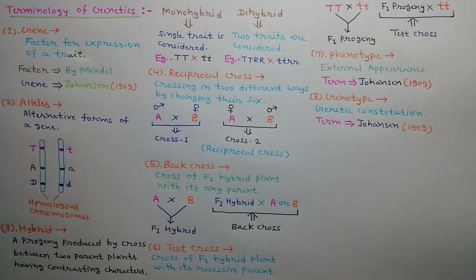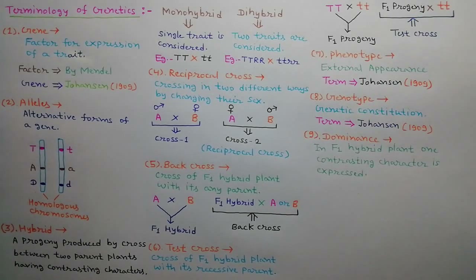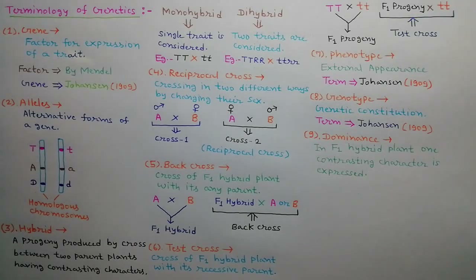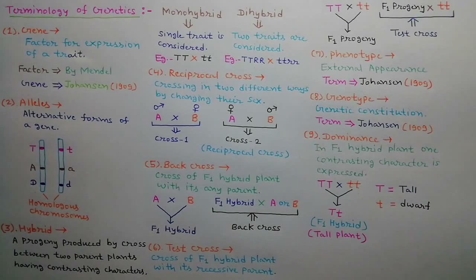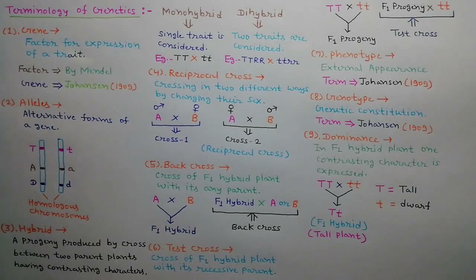When pure parent plants with contrasting characters are crossed, the F1 hybrid is produced. In the F1 hybrid plant, only one contrasting character is expressed, which is called the dominant character, and the other contrasting character is suppressed, which is called the recessive character. As shown in the diagram, when a pure tall plant is crossed with a pure dwarf plant, the F1 hybrid progenies produced are tall in nature. It means tallness is a dominant character while dwarfness is a recessive character.